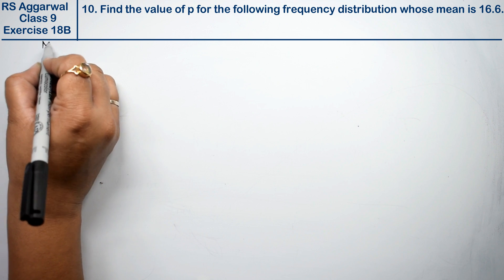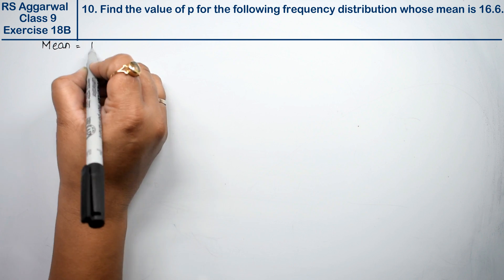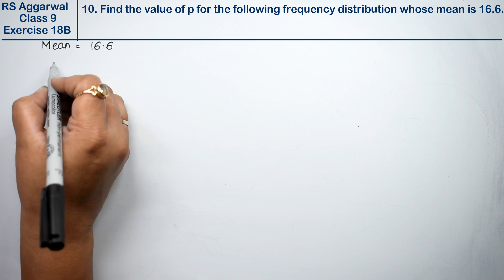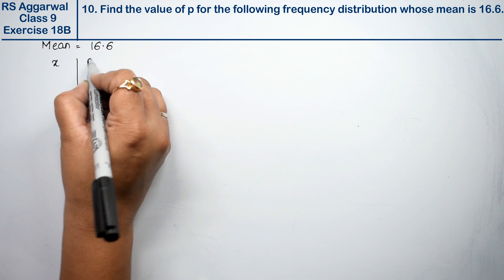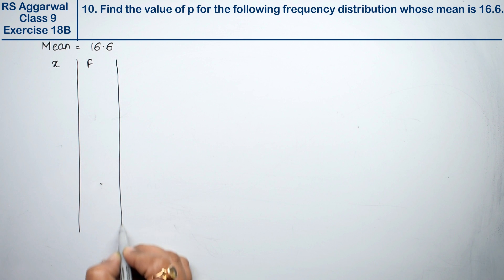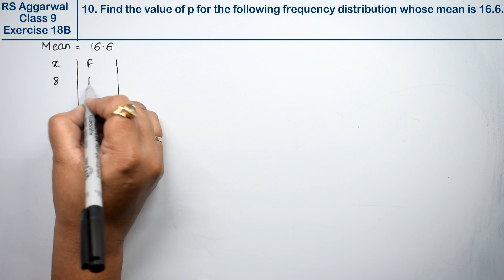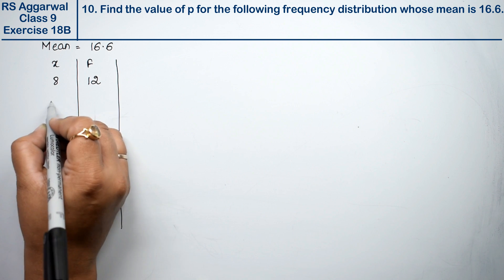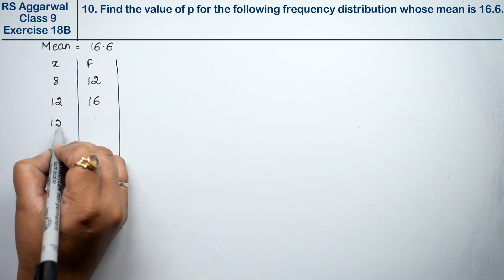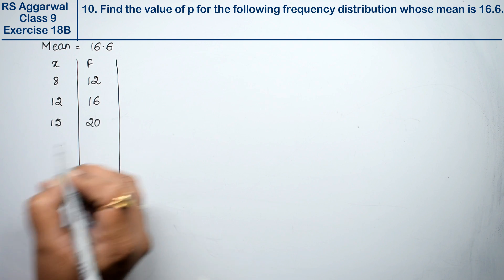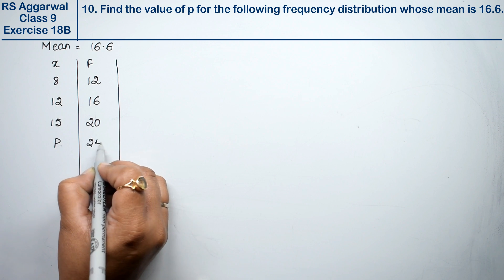We have the mean of 16.6 and need to find the value of p. Now let's set up a table with x and f values.